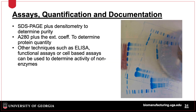Once proteins are purified, or sometimes in the middle of the process, the proteins will need to be quantified and analyzed. The two main ways to analyze proteins are spectrophotometry and SDS-PAGE, which give an estimate of total protein and protein purity, respectively. There are other techniques used to assess quality, such as ELISA and cell-based assays.